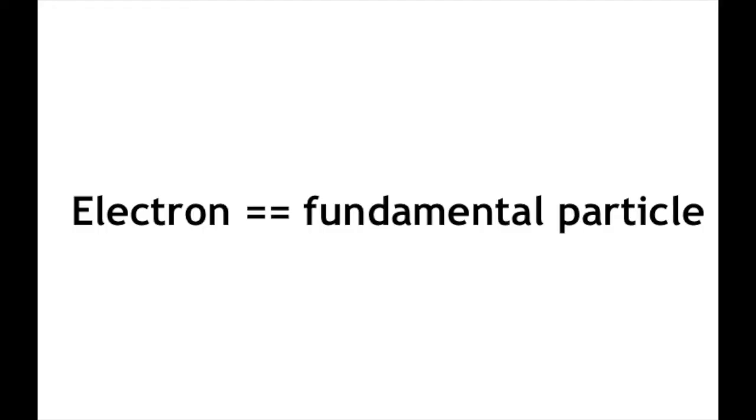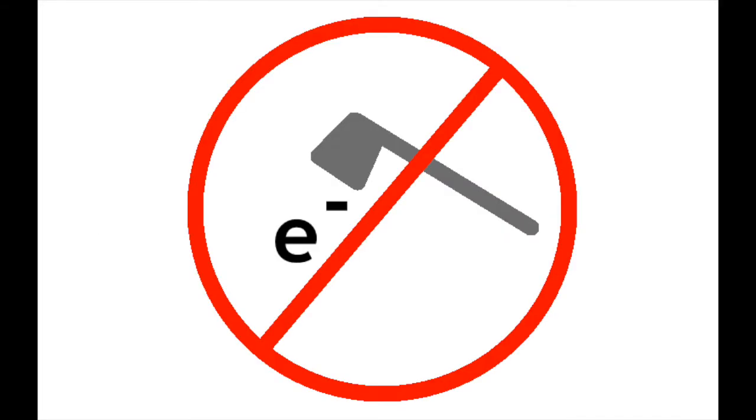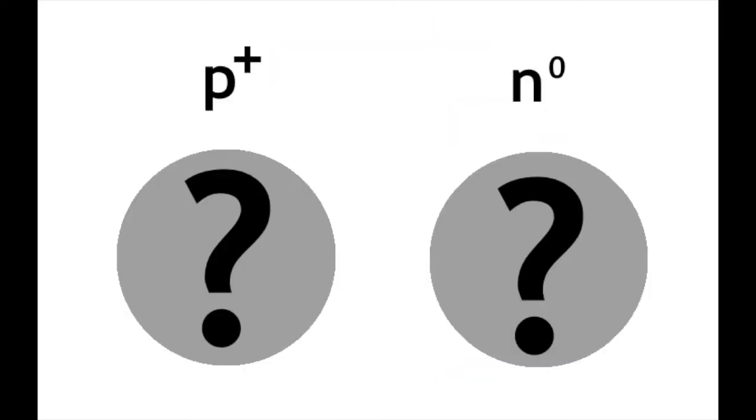It turns out that electrons are, in fact, a fundamental particle, meaning that you can't break it up into smaller pieces. So whereas electrons are not made of smaller particles, the protons and neutrons are.